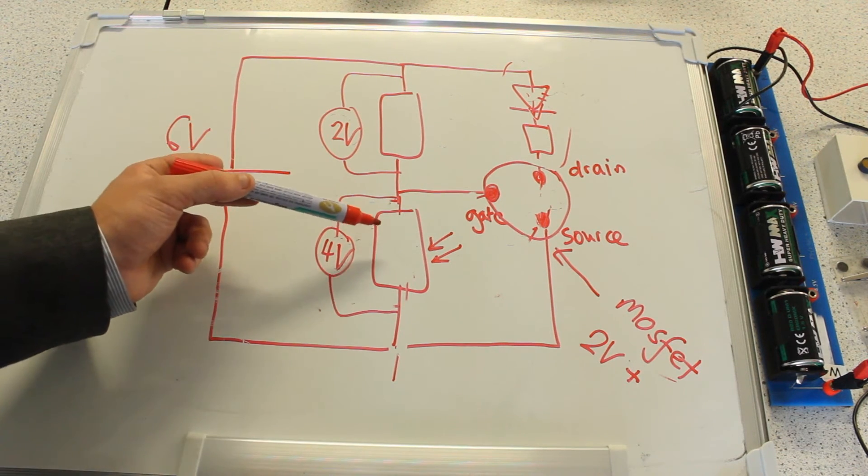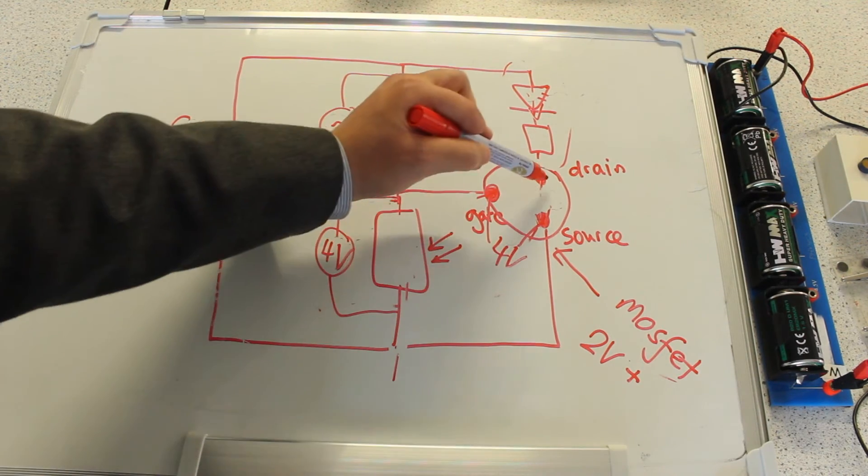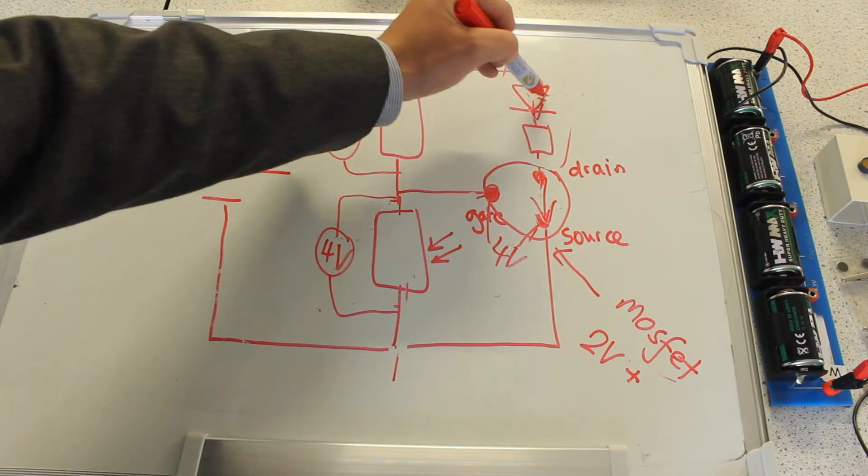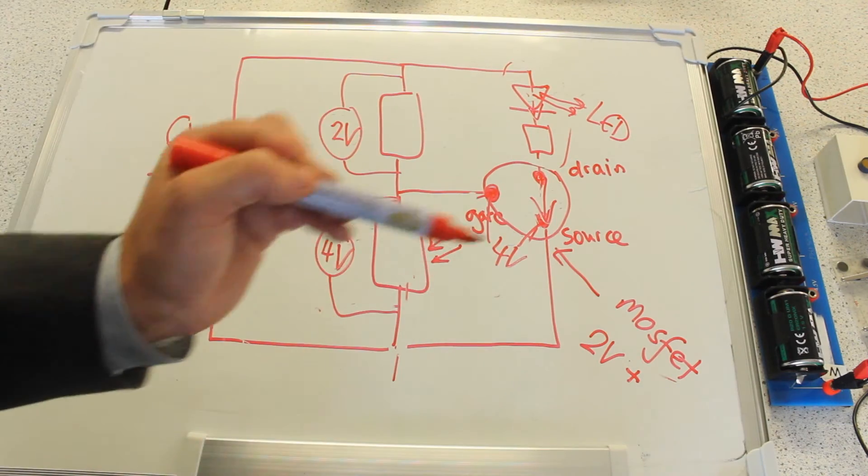When the voltage over the LDR is four volts, the voltage between the gate and the source is four volts as well. The transistor is activated and the LED turns on, which is exactly what we saw happening earlier.